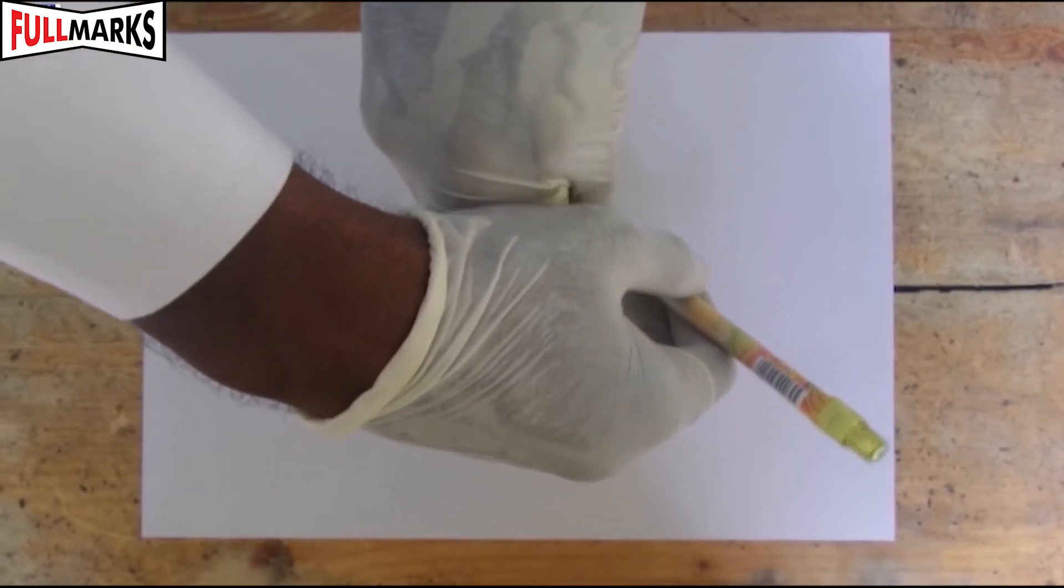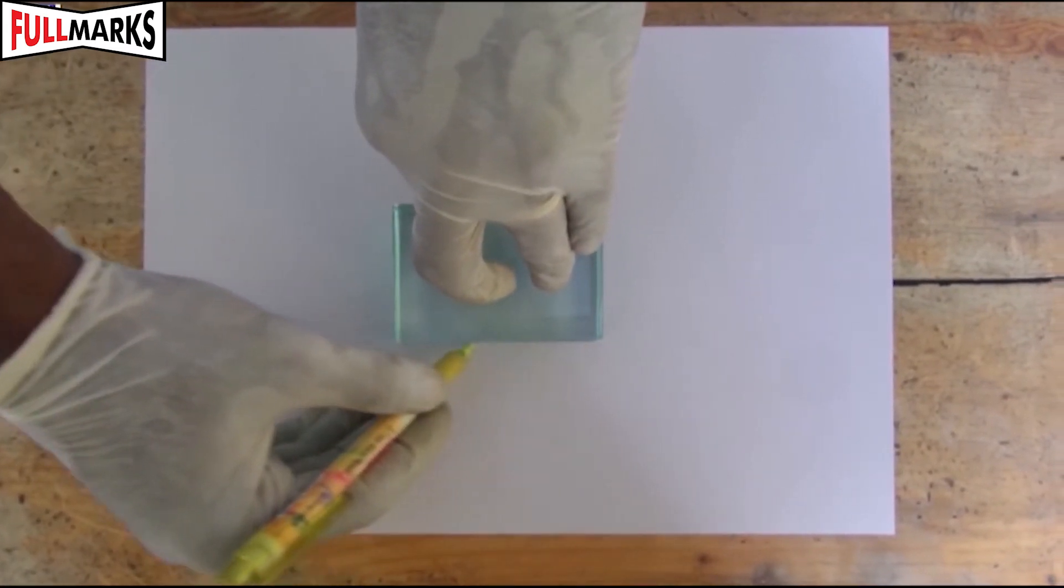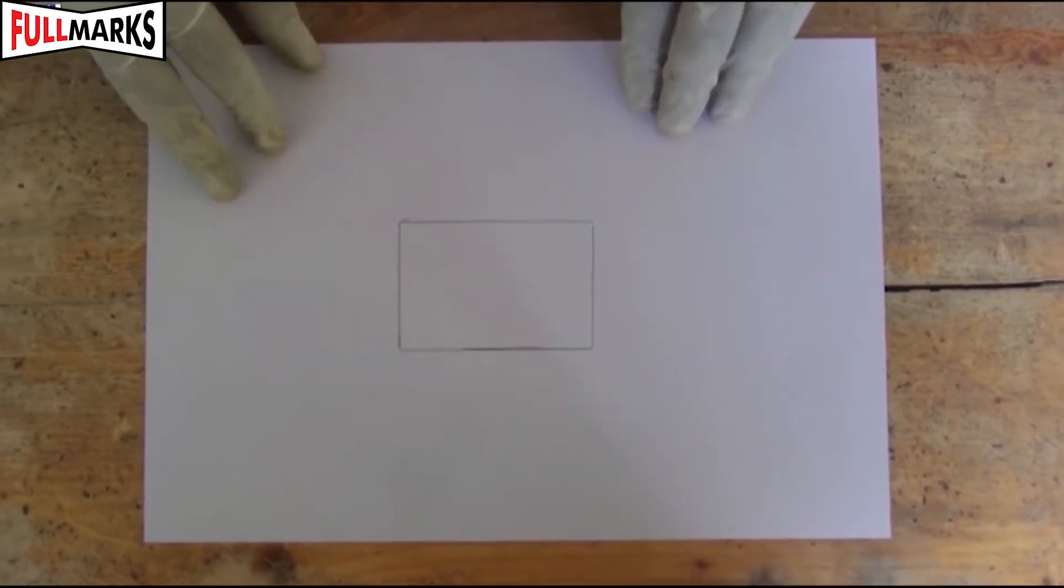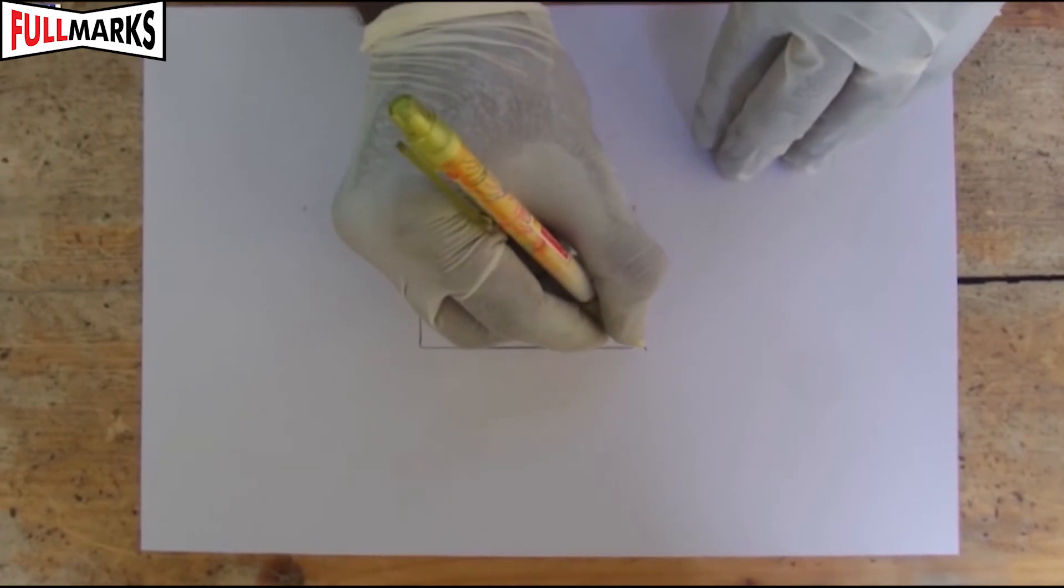Place a rectangular glass slab in the center of the white paper and draw its outline boundary with pencil. Mark this rectangular figure obtained as ABCD.